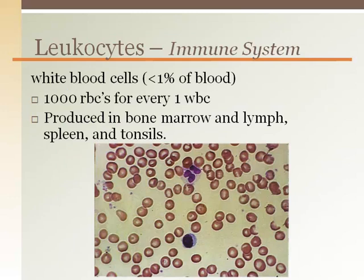Leukocytes are much less numerous than red blood cells. They are produced in the bone marrow as well as lymphatic tissues such as the lymph nodes, spleen, and tonsils. Leukocytes are seen as the purple stained cells on a prepared blood slide, because they take in more of the purple stain — kind of like a white shirt getting grape juice on it; it picks up more stain.